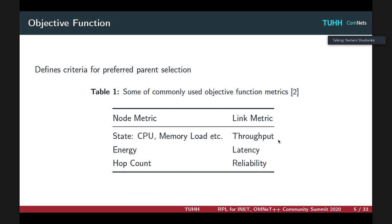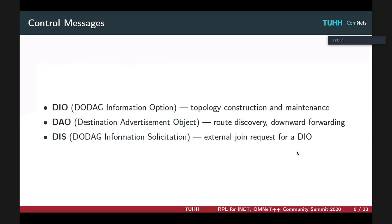Different metrics can be chosen during the preferred parent evaluation procedure, such as energy, hop count, latency, or any other. The three control messages used by RPL are DIO, DAO, and DIS messages. We will only focus on the first two because they are used for topology construction and for downward routing management, correspondingly.